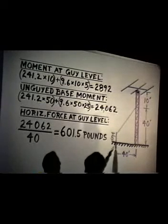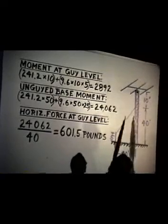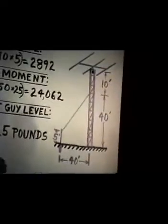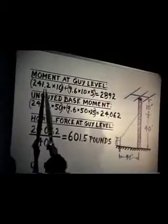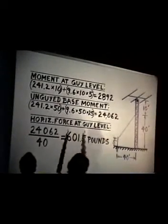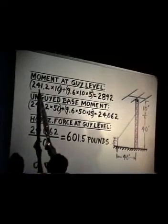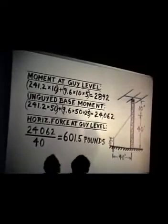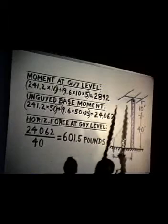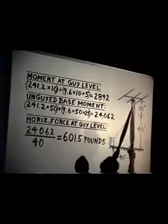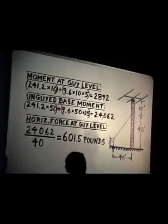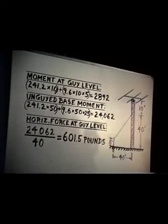Let's see what bending moment we'll have at the guy level. Again, 241.2 of force on the beam plus 10 pounds of rotor, times 10 feet down from the guy point, plus 9.6 pounds per foot on the tower, rotor cable, and coax, times 5 feet — it's a distributed load, so just from halfway up down to there. It gives us 2,892 foot-pounds. That is well below the 5,130 foot-pounds that the 25G tower will withstand.